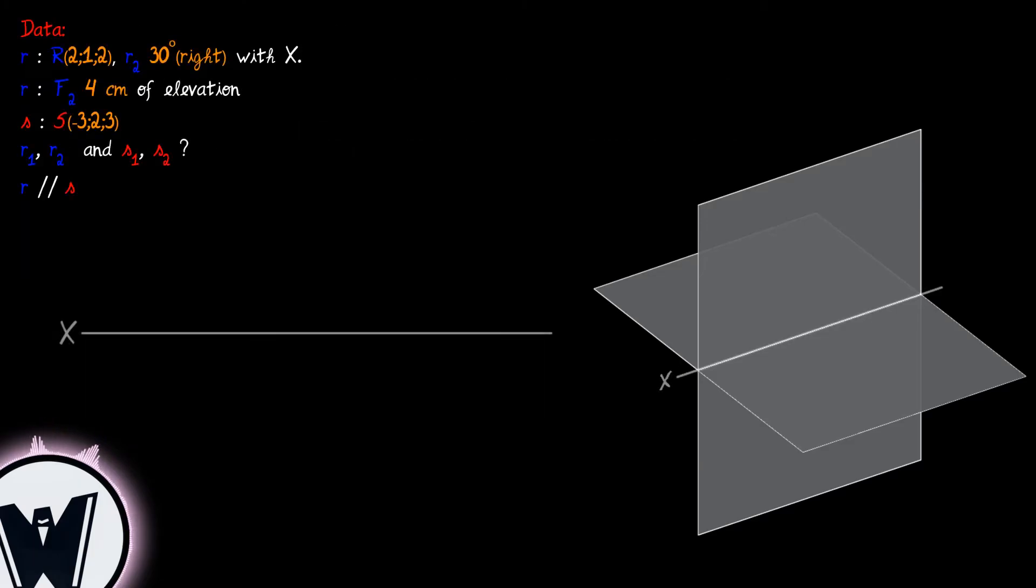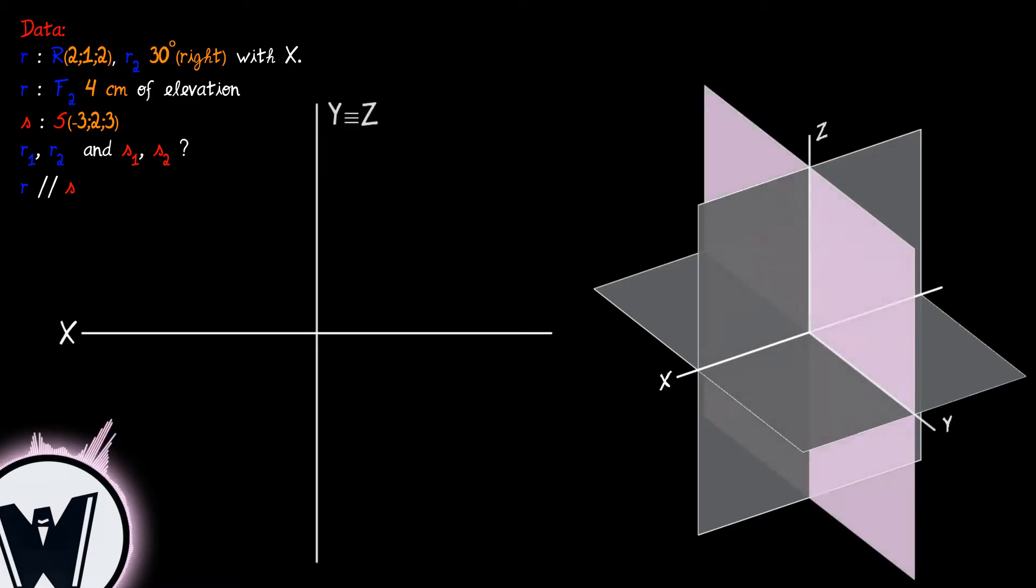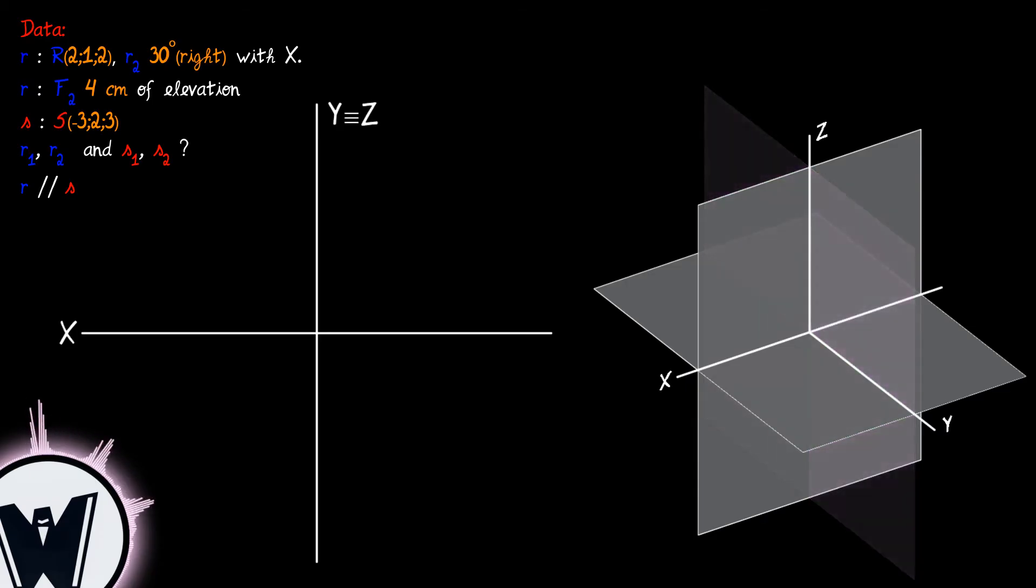We start by drawing the x-axis, the intersection of the frontal and horizontal reference planes represented on the right. Then we represent the profile plane that establishes the reference point for abscissas.